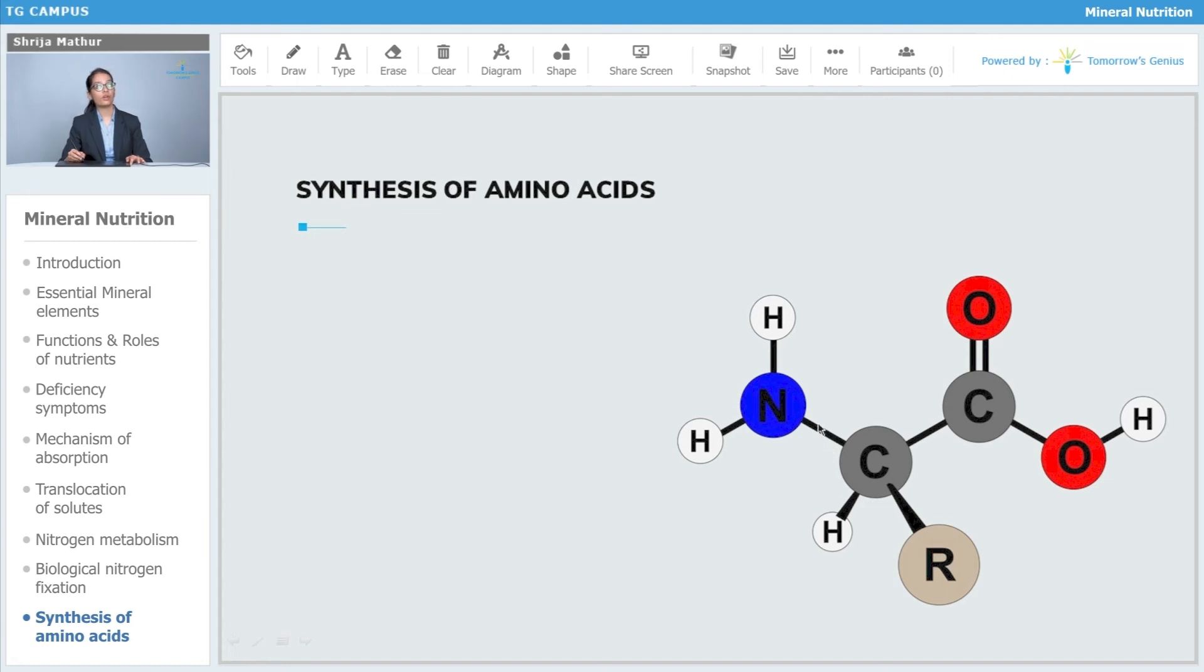Now let's move to a new topic: synthesis of amino acids. Amino acids are the initial products of nitrogen assimilation. Most plants can assimilate nitrates as well as ammonium ions.